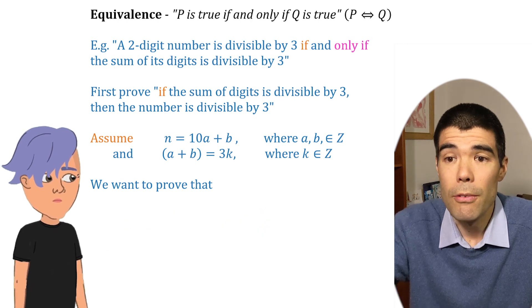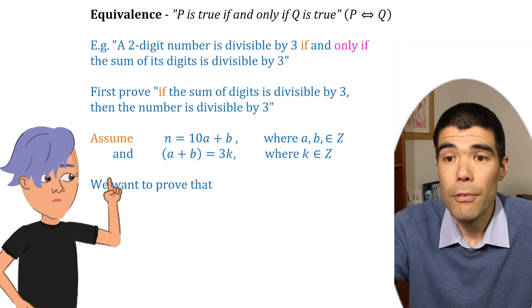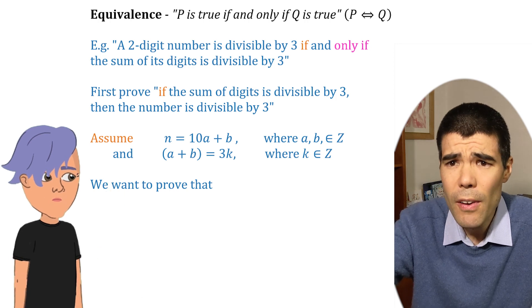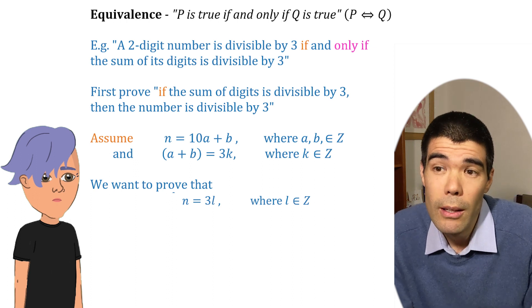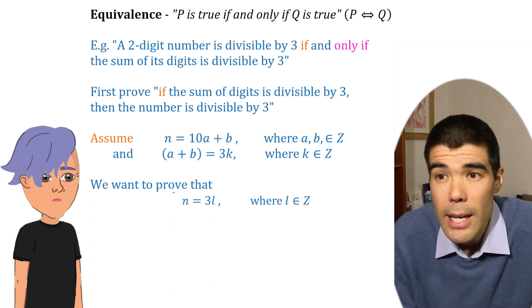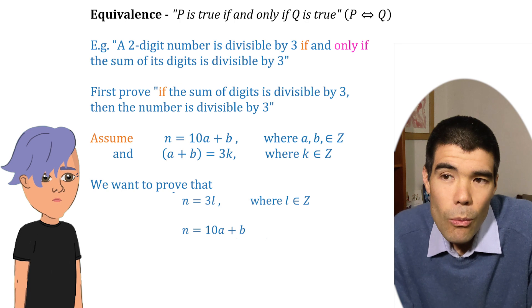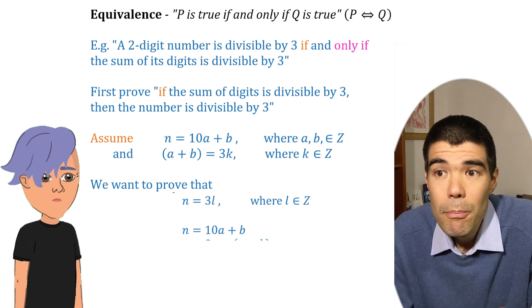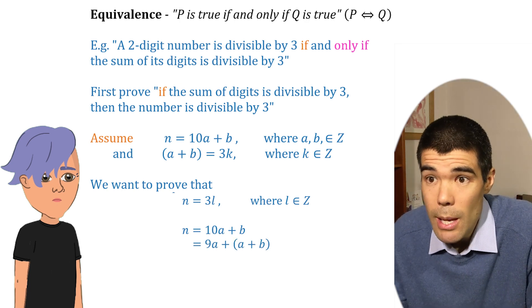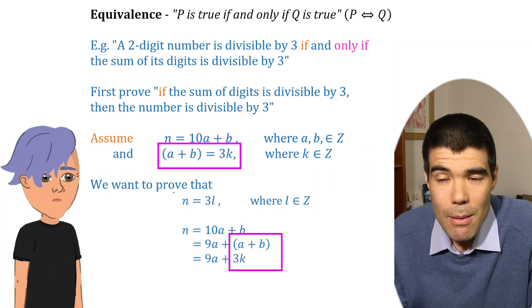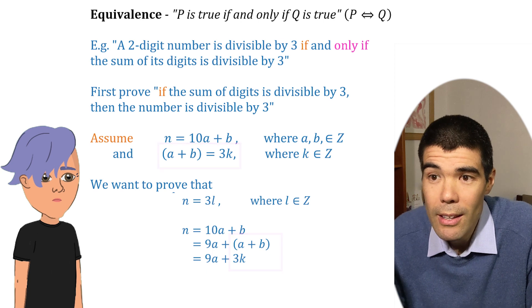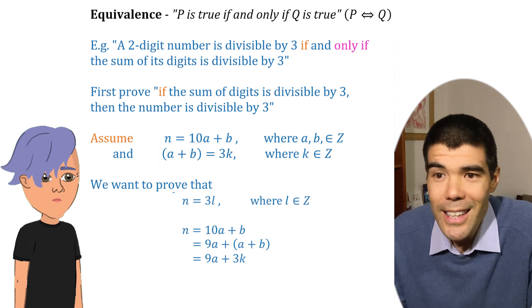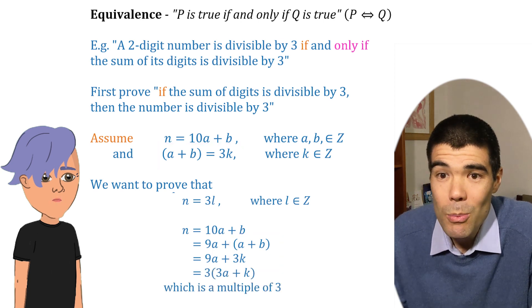A different letter. So l. L is fine. We want to prove that n is equal to 3l. So starting from n is 10a plus b. That's the same as 9a plus the sum of the digits a plus b. Now, the sum of the digits was 3k. So this is now 9a plus 3k. Which are both multiples of 3. Right, it's a multiple of 3.